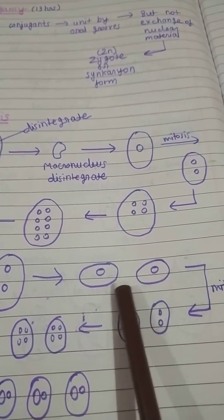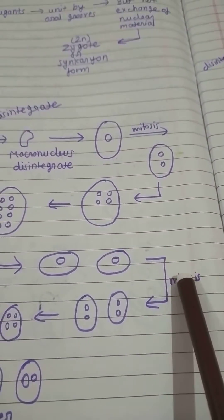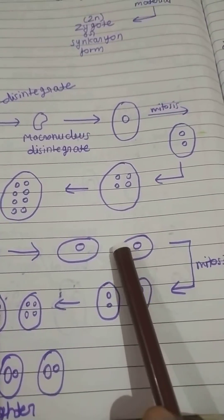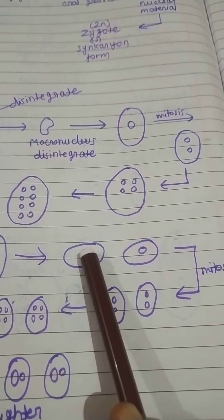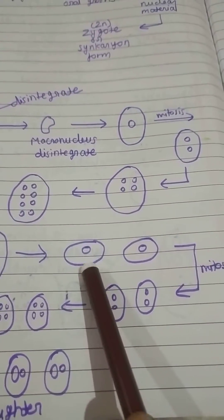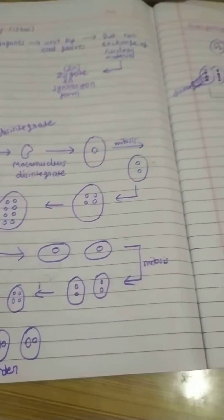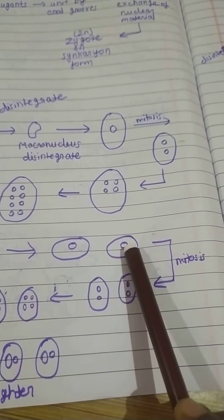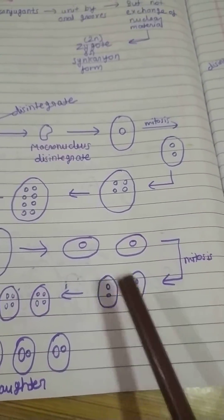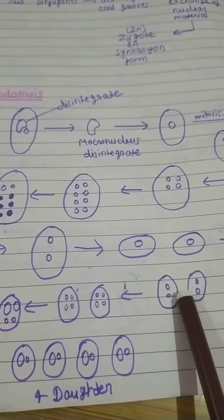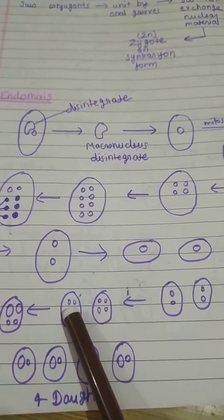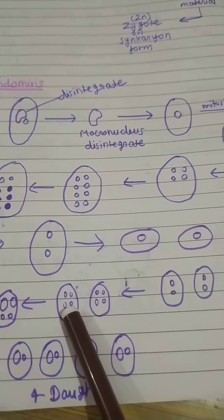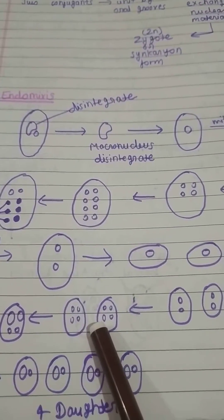Each Paramecium consists of two micronuclei. After mitotic division occurs, each micronucleus divides to form two micronuclei. So one divides into two by mitotic division, and another one also divides into two, giving each Paramecium four micronuclei.